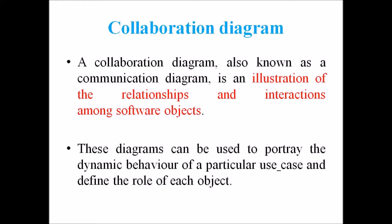Instead of showing the flow of messages, it depicts the architecture of the objects residing in the system as it is based on object-oriented programming. An object consists of several features. Multiple objects present in the system are connected to each other. The collaboration diagram, which is also known as a communication diagram, is used to portray the objects architecture in a system.